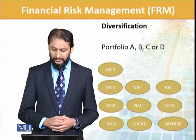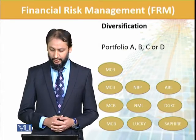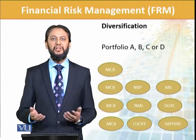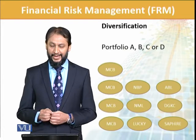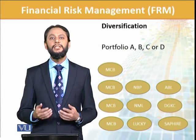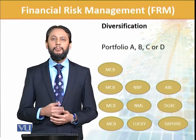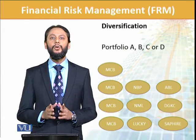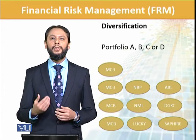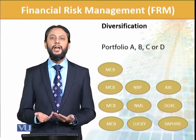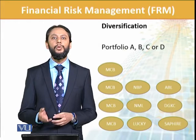Now look at another possible portfolio. We have MCB, Nishat Mills, and DG Khan Cement — theoretically a bank, textile company, and cement company. My answer would be again: no, it's not very good. Why? Because all three companies belong to one group of companies — Nishat Group. So their connection and main sponsors are the same. If something happens to that particular sponsor, then all these portfolio holdings will get affected.